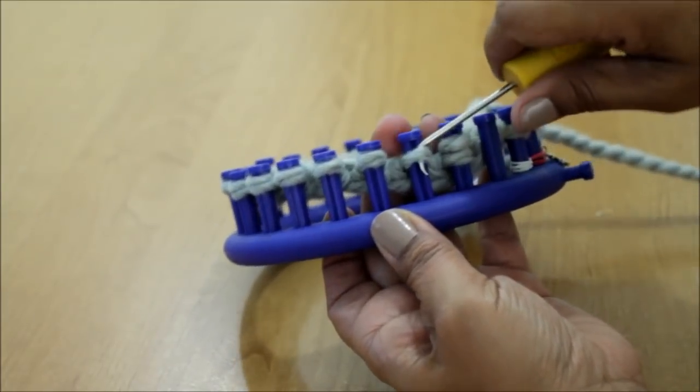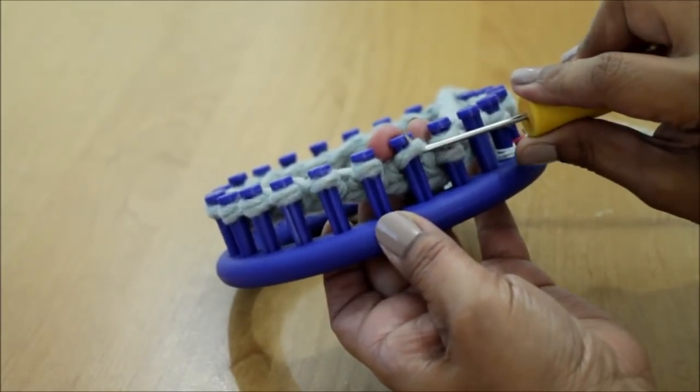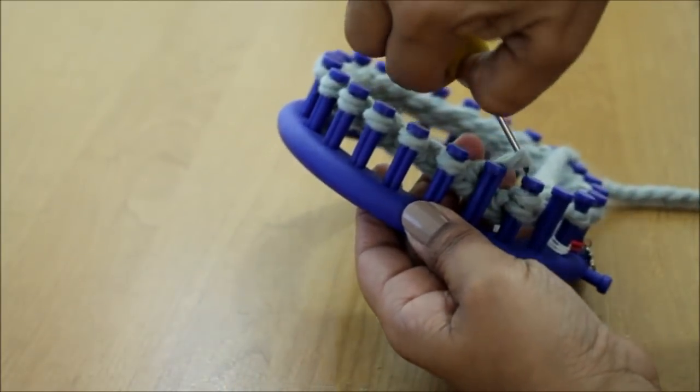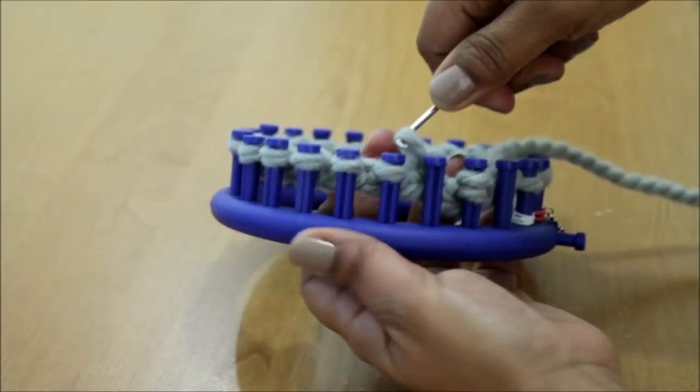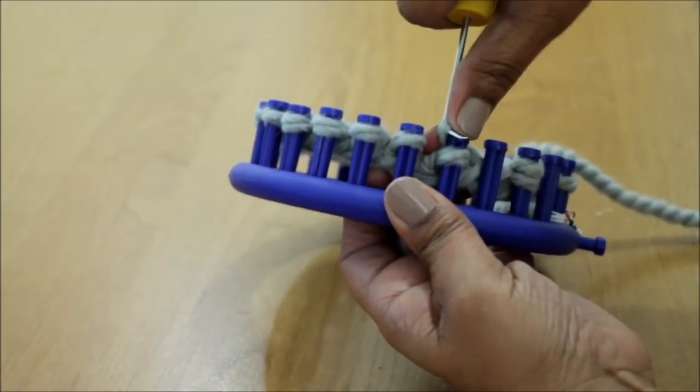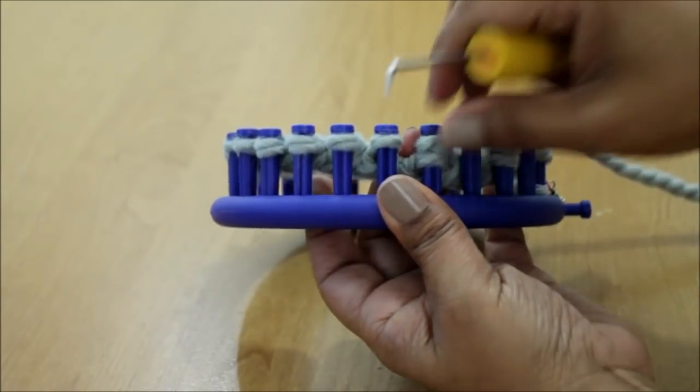So here you're going to remove the next loop and it is an e-wrap so you're going to unravel it and put it on the peg next to it. That is going to be a knit two together.